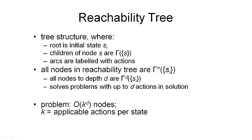What we have done in our forward tree search algorithm is effectively constructed a reachability tree. In this tree, our root node was the initial state SI that was given as part of the problem. And for each node S, we had the children of a node S be gamma of S — that's the immediate successors of that state S. And then we had the arcs labeled with the actions that correspond to the state transitions. That is the tree we constructed in forward search.